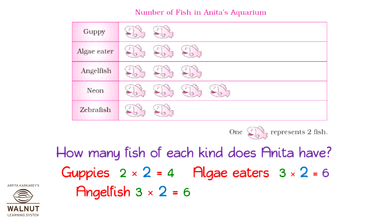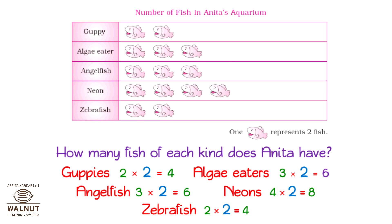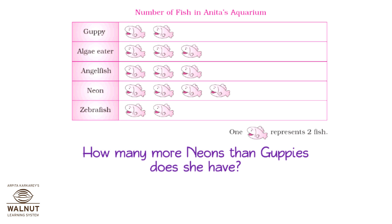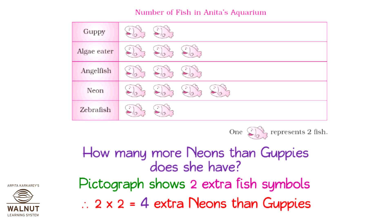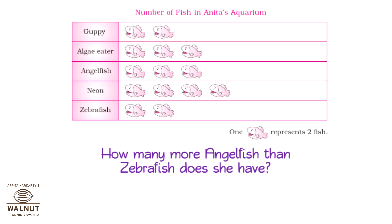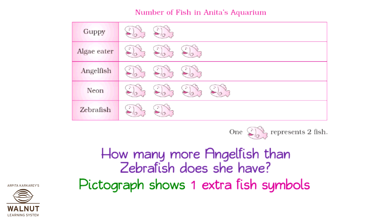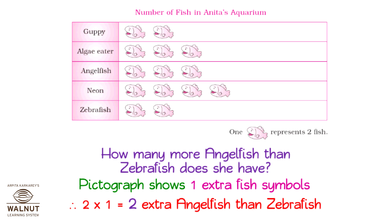For neons, there are four pictures, so four into two is equal to eight. For zebra fish, there are two pictures, so two into two is equal to four. How many more neons than guppies does she have? The pictograph shows two extra fish symbols, so two into two is equal to four extra neons than guppies. How many more angel fish than zebra fish? The pictograph shows one extra fish symbol, so one into two is equal to two extra angel fish than zebra fish.